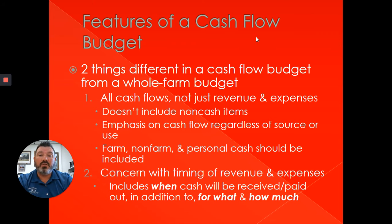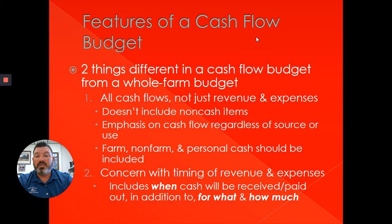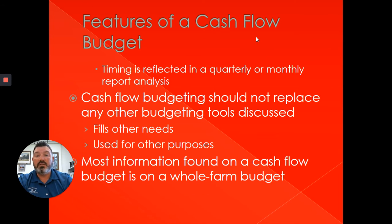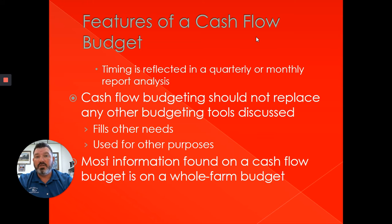Two things are different in a cash flow budget compared to a whole farm budget. Number one: it covers all cash flows, not just revenue and expense — it doesn't include non-cash items. The emphasis is on cash movement from farm, non-farm, or personal cash; it doesn't include the value of grain in the bin, for example. Number two: the concern is with timing of revenue and expenses — when cash is going to be received and paid out, in addition to what it's for and how much. Timing is reflected monthly, quarterly, or annually. A cash flow budget shouldn't replace enterprise budgets, partial budgets, or whole farm budgets — those all have other purposes, and the cash flow budget has a very specific focus on cash.